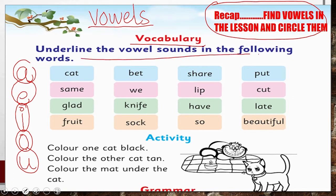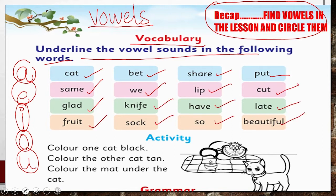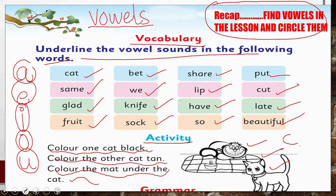Underline the vowel sounds in the following words. In diye gaye alfaaz mein se aapne vowels ko underline karna hai. Aur iske baad ek choti si activity hai: Color one cat black, color one cat tan, color the mat under the cat. Inko aapne color karna hai — black, tan means dark brown, aur mat mein aap koi bhi colorful color istemal kar sakte hain.